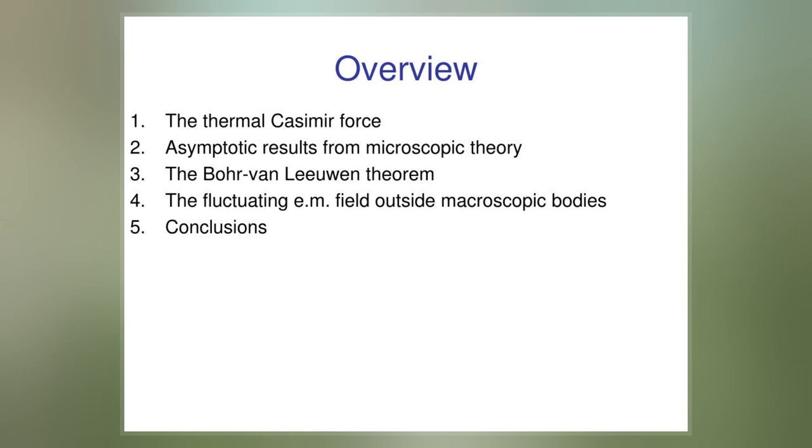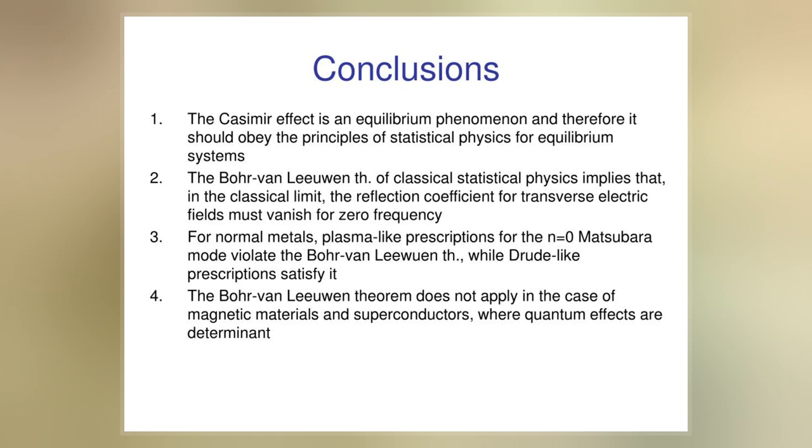The significance of this discovery is that classical physics does not allow for such things as paramagnetism, diamagnetism, and ferromagnetism, and thus quantum physics is needed to explain these magnetic events.